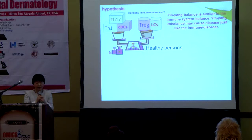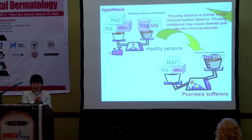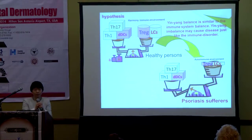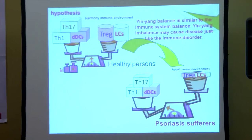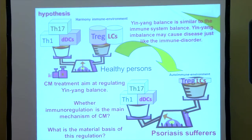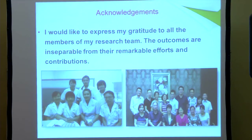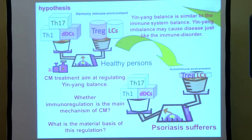We hypothesize that yin-yang balance is similar to the immune system's balance, and yin-yang imbalance may cause disease just like immune disorder. In a healthy person, there is a harmonious immune environment inside the body, whereas a psoriasis sufferer has an autoimmune environment. So Chinese medicine treatment aims at regulating yin-yang balance. Whether immunoregulation is the main mechanism of Chinese medicine on psoriasis, and what the material basis of this regulation is, remains to be revealed.